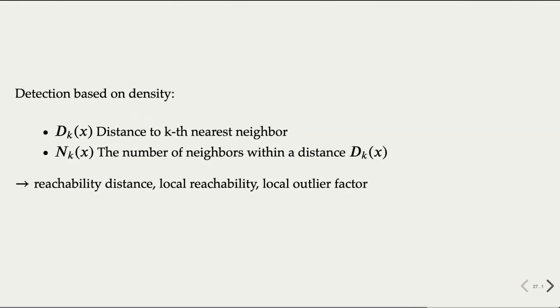To compare the density, we can compute two basic measures. One's distance to the k's nearest neighbor (dk), and the number of neighbors within the distance (nk). And based on these two, a number of metrics such as reachability distance, local reachability, and local outlier factor can be calculated to identify local density outliers.